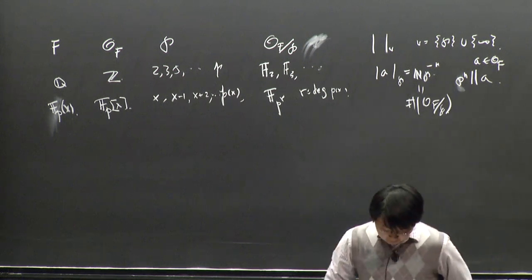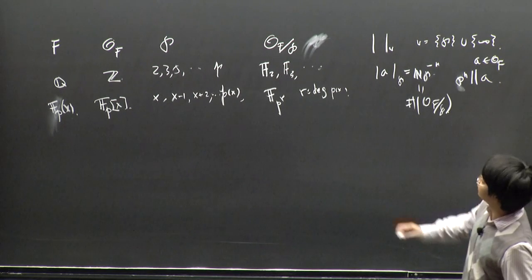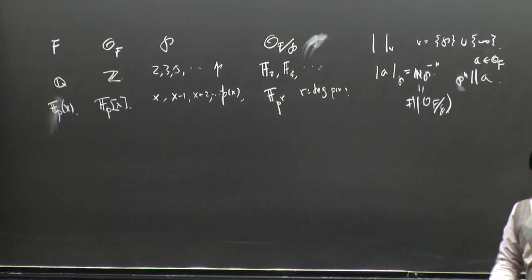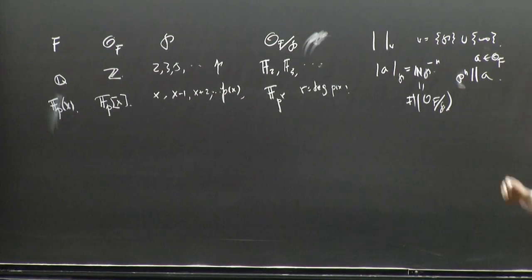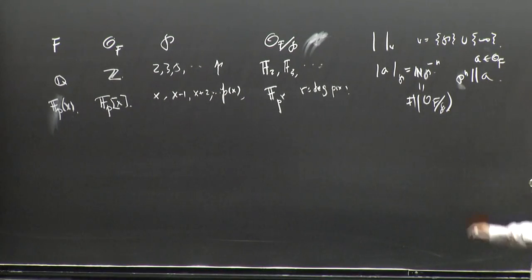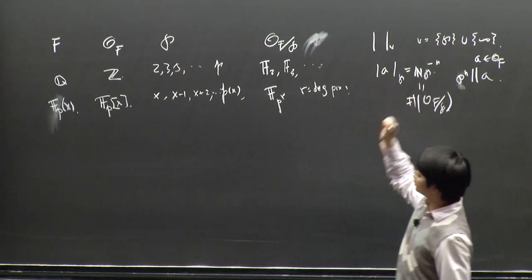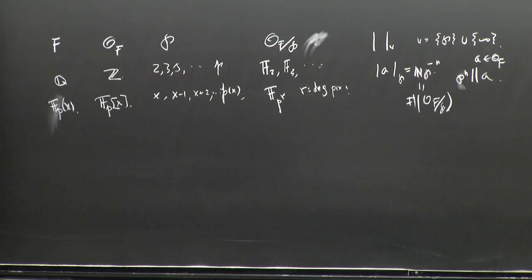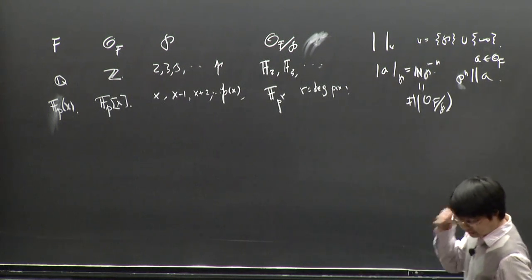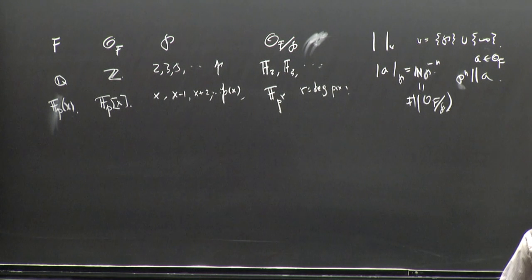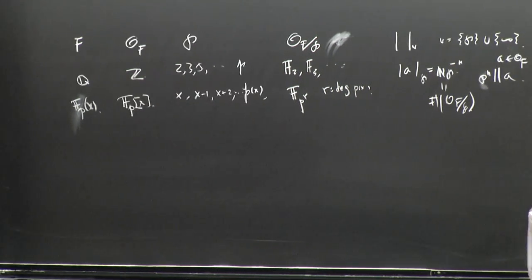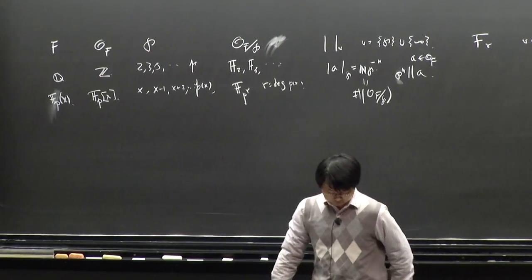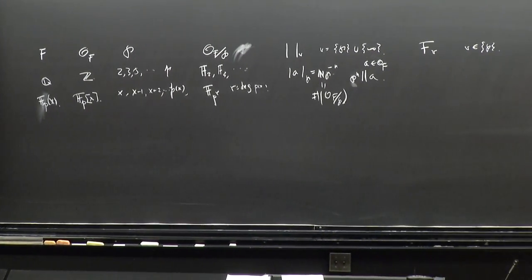There are certain analogies, but of course there's a great difference between number fields and function fields. In particular, the absolute value at infinity for ℚ is the usual Archimedean absolute value. But for the function field, the absolute value at infinity is non-Archimedean — it basically picks up the degree of the polynomial. The analogy goes further if we pass to local fields by taking completions.